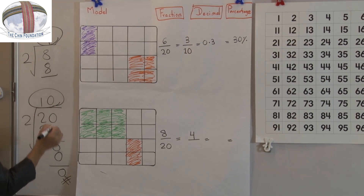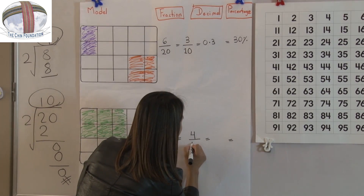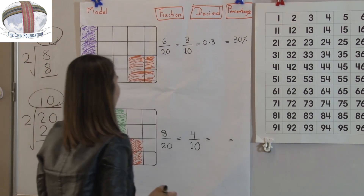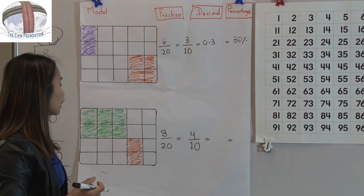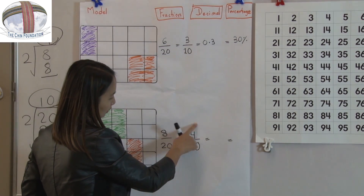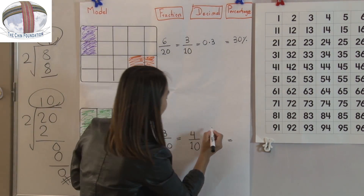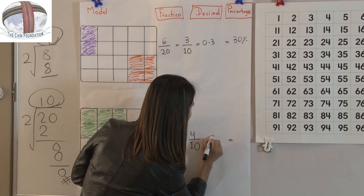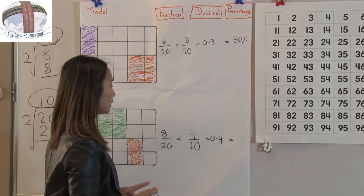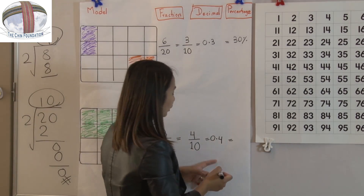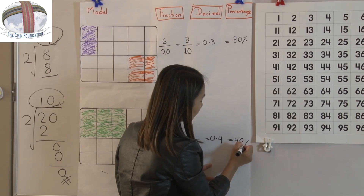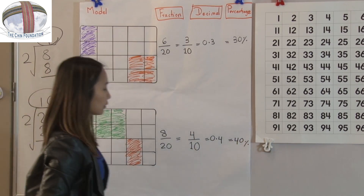So we have 4 out of 10. The decimal: pay attention on the numerator, which is 4, so we write 0.4. For percentage, that is 40 out of 100, so 40 percent.